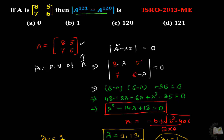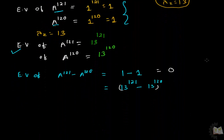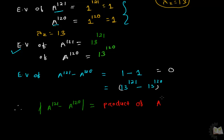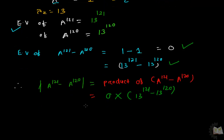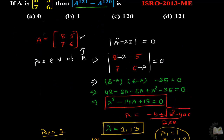The determinant of (A^121 minus A^120) equals the product of all eigenvalues of (A^121 minus A^120). We have two eigenvalues: one is 0 and the other is 13^121 minus 13^120. Since one eigenvalue is 0, the product — and therefore the determinant — is 0. So the final answer is 0, which is option A.